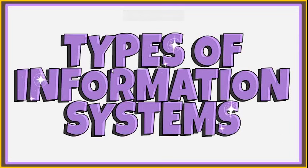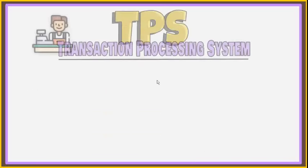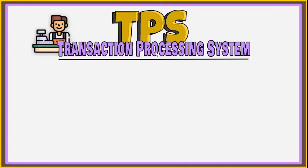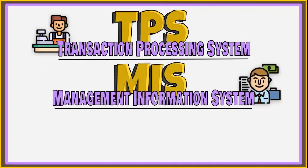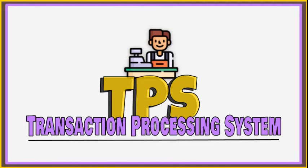In this video, we are going to learn the most common types of information systems used in different levels of an organization. They are the Transaction Processing System, or TPS, Management Information System, or MIS, and Decision Support System, or DSS. Although these systems are commonly discussed separately, they are often integrated in one product and delivered by the same software package.